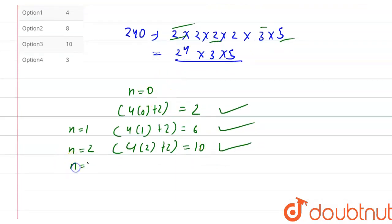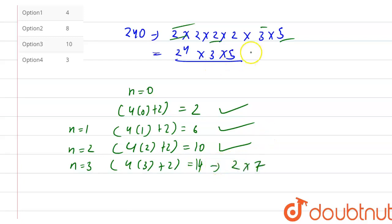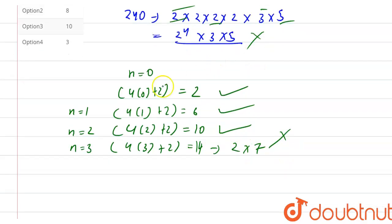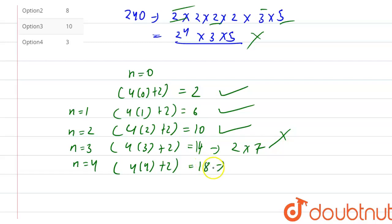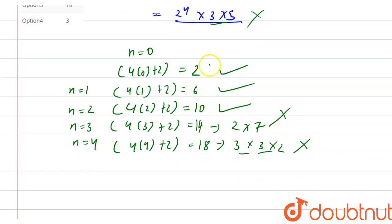If I put n equal to 3, then 4(3) plus 2 equals 14. The factors of 14 are 2 × 7, but 7 is not a factor of 240, so 14 is not a solution. Now n equal to 4 gives 4(4) plus 2 equal to 18. The factor 18 = 2 × 9 = 2 × 3², but we only have one factor of 3 in 240, so 18 is not a factor either.